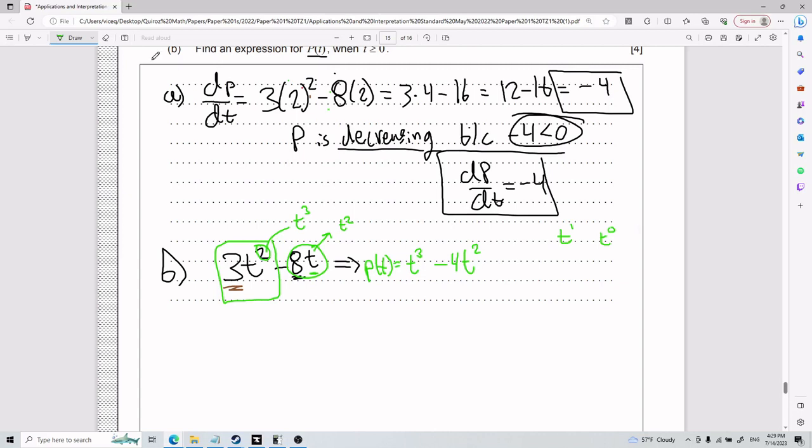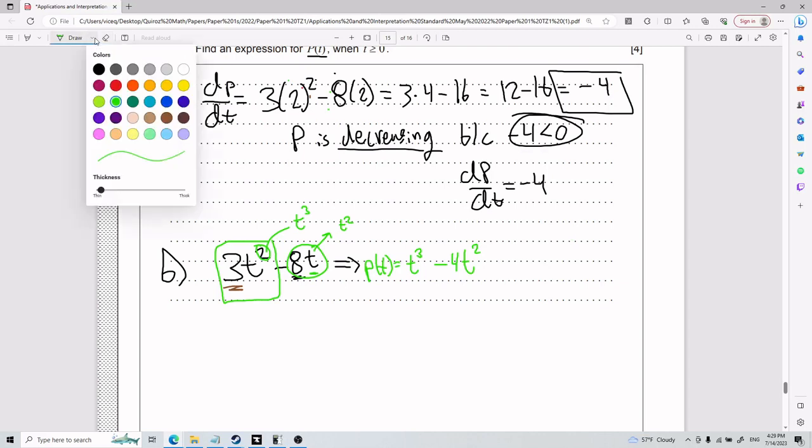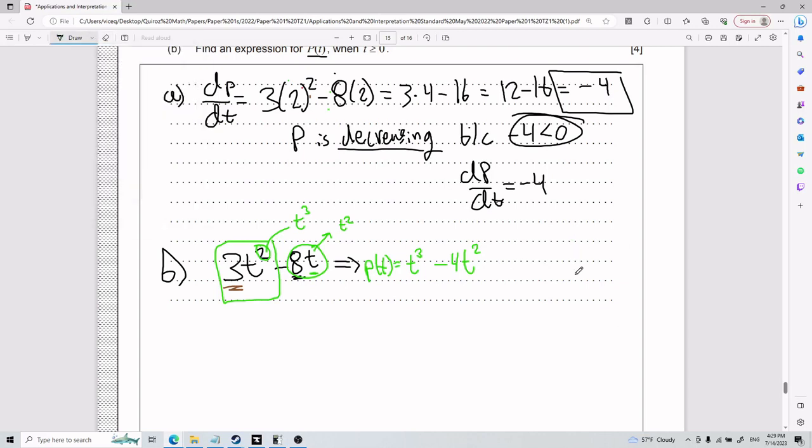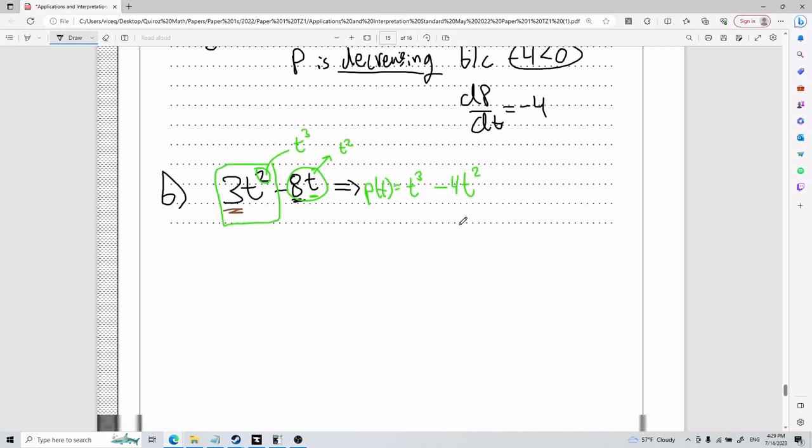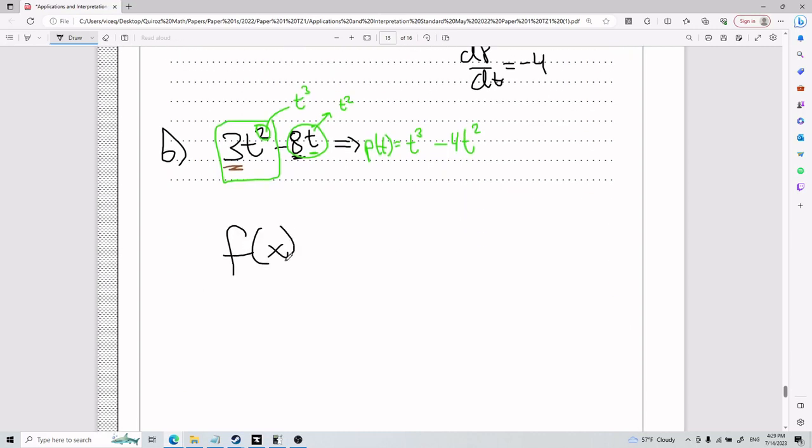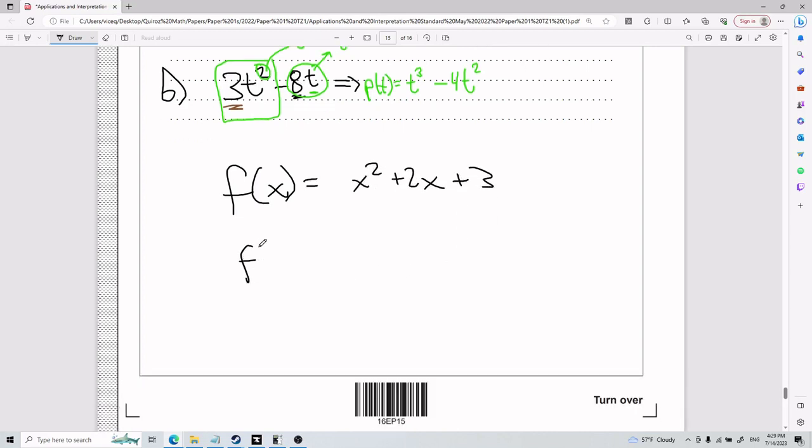So anything to the power of 1 would have been like a constant. But anything without t, I'm not really accounting for. So that is a constant that would simply disappear. What do I mean by this? If you have f(x) equals x squared plus 2x plus 3, and you do the derivative of this, you end up with 2x plus 2, and this 3 disappears. Straight up disappears.